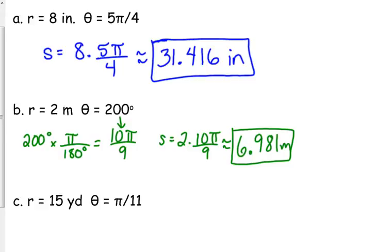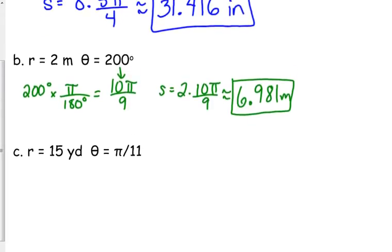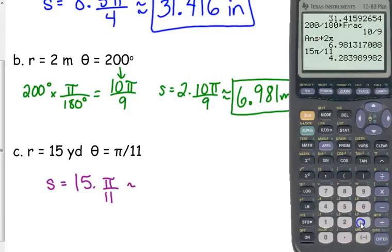And, one more. We've got our radius. Theta is in radians. So, we don't have to do any extra work here. We can just plug and chug. 15 times pi over 11. So, we get 15 pi over 11. Gives us 4.284 yards.